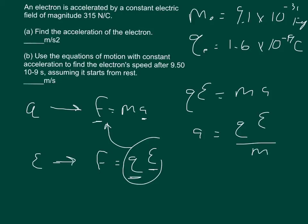So you go ahead and plug in your numbers: the charge is 1.6 times 10 to the negative 19, 315 newtons per coulomb is the electric field, and the mass is 9.1 times 10 to the negative 31. You should get that the acceleration is approximately 5.53 times 10 to the positive 13 meters per second squared.